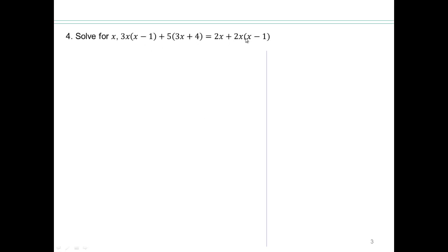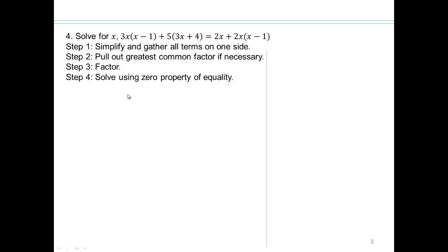All right, how about this one? Look at all these terms. Can't do anything with it until you pull everything together and have zero on one side. Otherwise, you cannot use the zero property, right? So let's multiply it out then. So simplify and gather all terms on one side, and then pull out the greatest common factor, factor, and then use zero property. Unless you have zero on one side and it's in the factored form, you cannot use the zero property of equality.